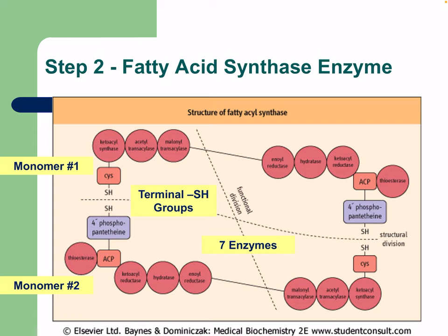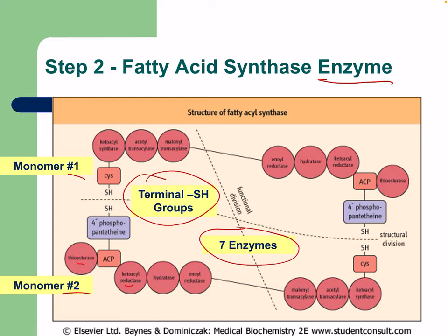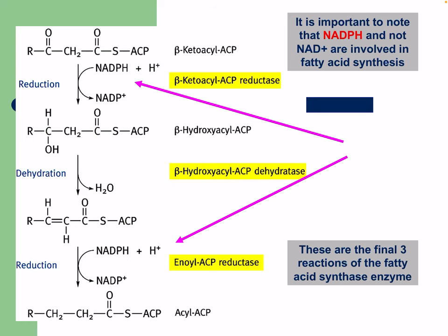Step two uses the fatty acid synthase enzyme, which has two monomers with terminal SH groups and seven enzymes. It's important to note that NADPH, not NADH, is involved in fatty acid synthesis — NADPH provides reductive power for energy storage. NAD+ has oxidative power for energy production, while NADPH has reductive power for energy storage. These are the three final reactions of the fatty acid synthase enzyme.